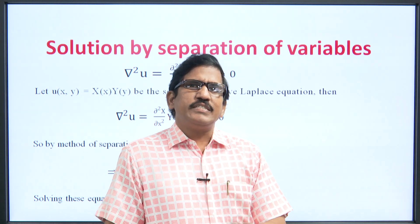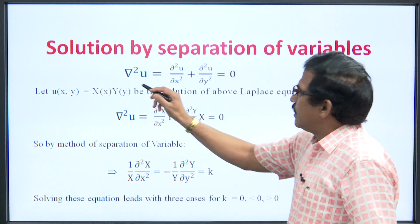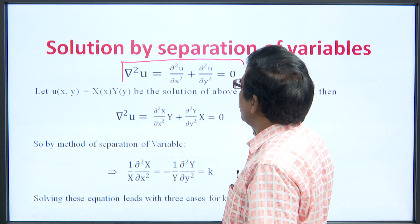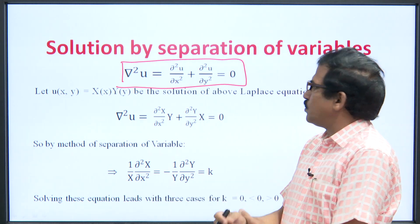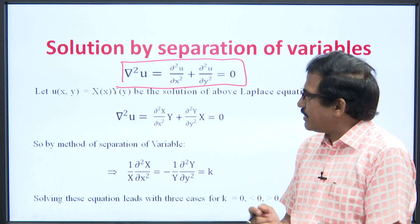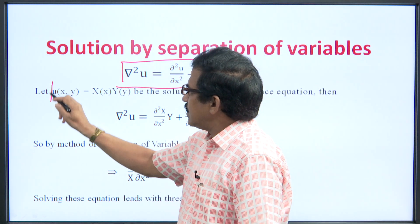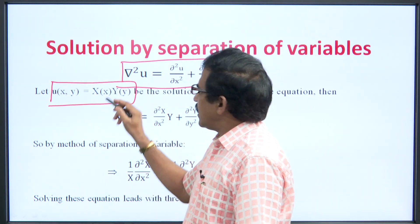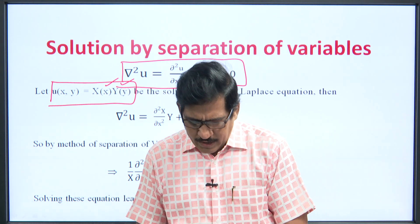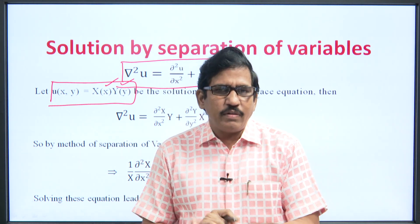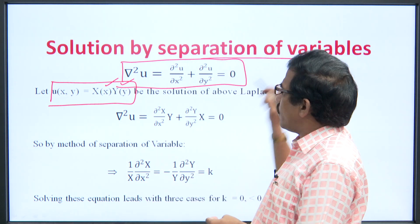How do we solve these types of differential equations? The Laplace differential equation is del²u = del²u/del x² + del²u/del y². To solve this differential equation, let us consider that u is a function of x and a function of y. The most straightforward way to solve this Laplace equation is the method of separation of variables.